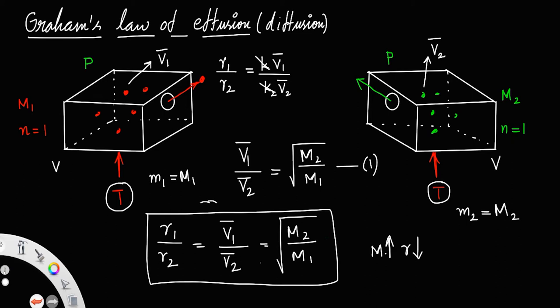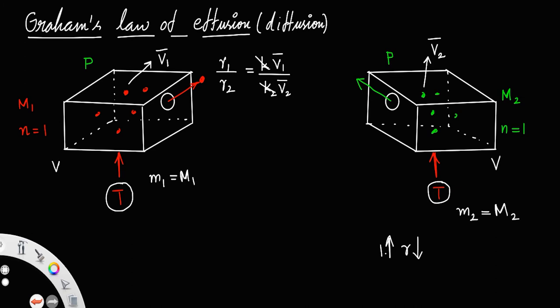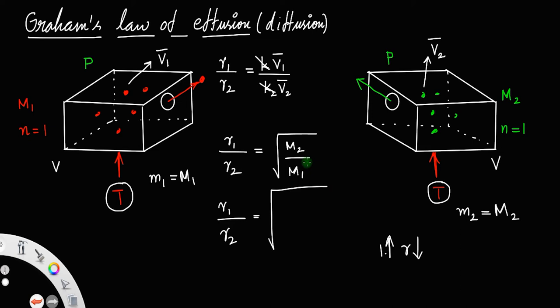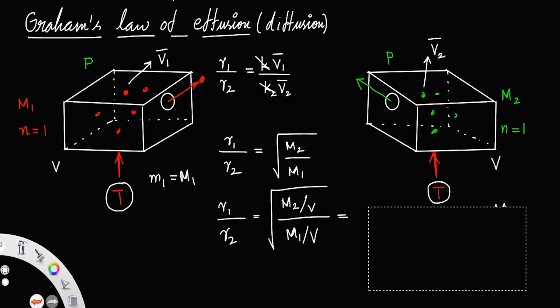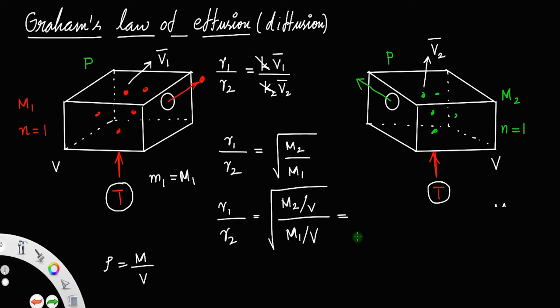Also, we have r1 by r2 equals root of m2 by m1. If we divide both m2 and m1 by the volume v of the box, we get m2/v divided by m1/v. Since mass by volume is density, this becomes root of density of the second gas by density of the first gas. So rate of diffusion or effusion is also inversely proportional to the square root of density. This is also Graham's law.